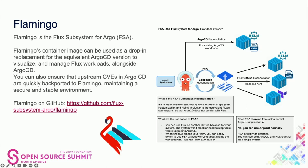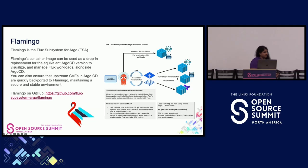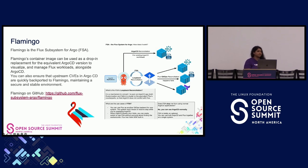If Flux objects already exist for the application, Flamingo will use them as references instead of creating new ones. Flamingo synchronizes the state of the Argo CD application with its Flux counterparts by using the state of the Flux objects as the desired state. The loop-back reconciliation mechanism bypasses the native reconciliation process in Argo CD and relies on Flux reconciliation instead, then uses the result from the Flux objects to report back to Argo CD. This helps ensure reliability and consistency of GitOps-based deployments by keeping application state in sync with the desired state defined in the Flux objects.